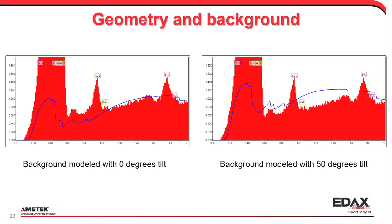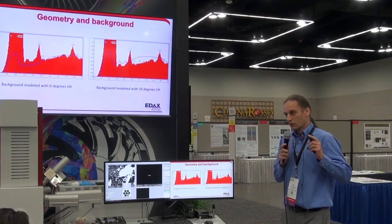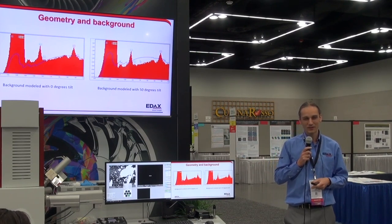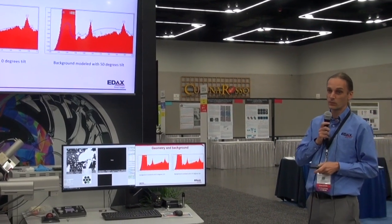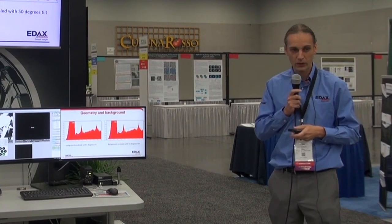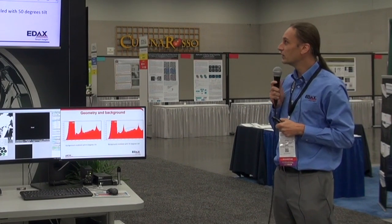Interestingly, we can figure out the sample tilt by looking at the background. Here I have a spectrum collected with the sample flat — zero degrees tilt — and you can see the blue line gives a quite nice fit. If we take the same spectrum and lie to the model saying it's tilted at 50 degrees, the blue line suggests we should have more signal in the low energy range than we actually have. So if you get a bad background fit, there's a good chance it's not a problem with the background model — it's a problem with the sample.